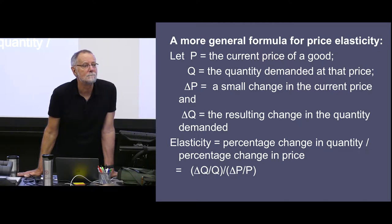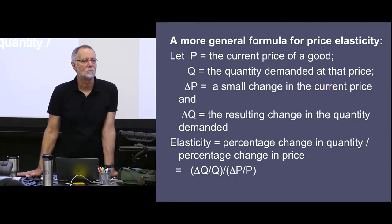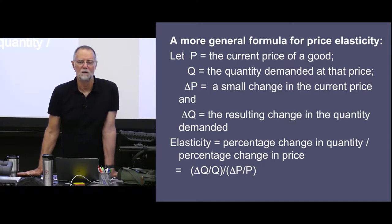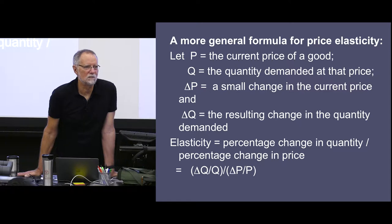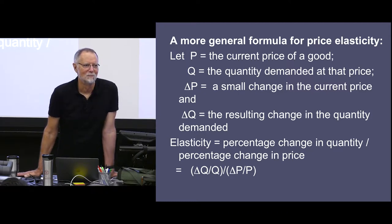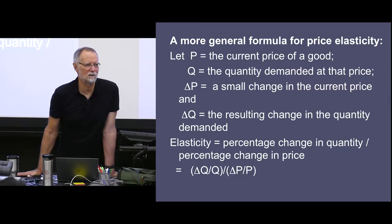A student asks: aren't there goods — Giffen goods — where price increases actually increase demand? The question is whether all goods have downward-sloping demand curves. I'm going to say yes. There are economists who discuss Giffen goods with upward-sloping demand curves, but there aren't any. People have tried to find them; every claimed example has been debunked conclusively.